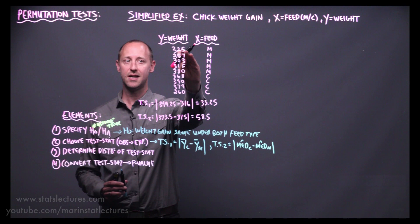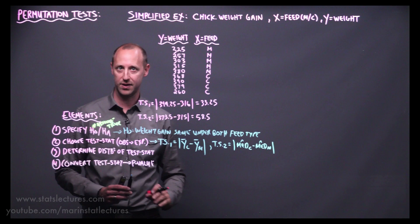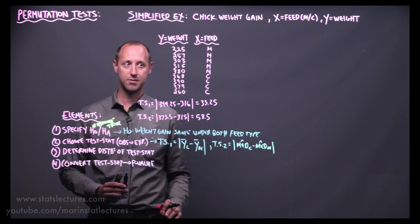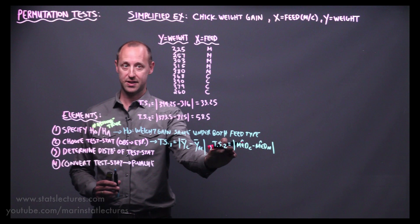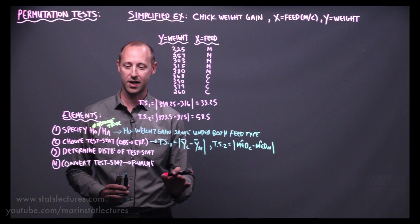The way we build up the distribution of test statistics and get to our p-value is by considering all possible permutations of this data. If these observations are equally likely to belong to either feed type — if they're independent of feed type — we consider all the possible orderings of these observations. Each of those orderings will be a unique permutation data set, and for each one we work out the test statistic, giving us all possible test statistics we could end up with if our null hypothesis were true.